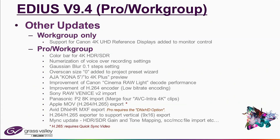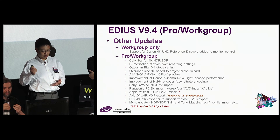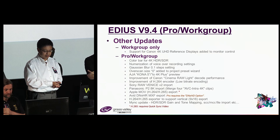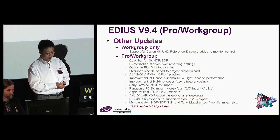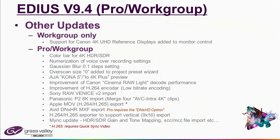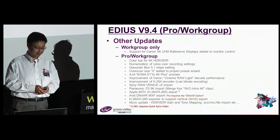H.265 decoding and High Quality Motion Tracking are also included. But we have many more updates in Version 9.4, including better support for third-party IO boards, and support for more formats — such as the Sony RAW format for the Venice, and Panasonic P2 8K clips. Exporting of DNX HR is also supported. There were many minor but very important updates done in 9.4, fulfilling many user requests — and for some users, these smaller updates are actually the deciding factor for choosing EDIUS.